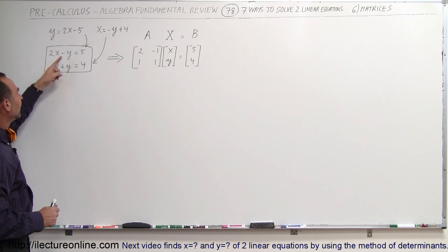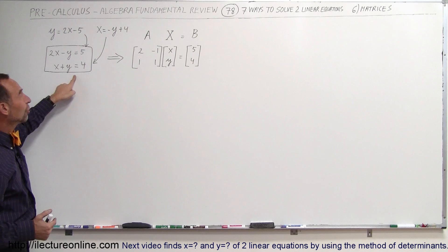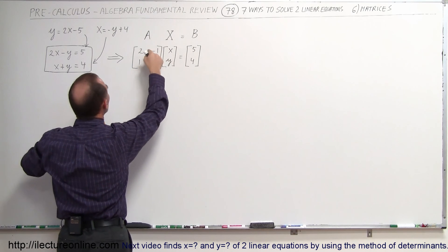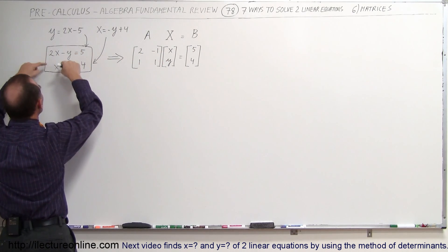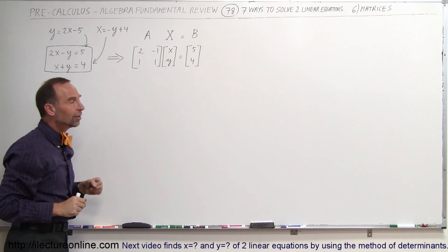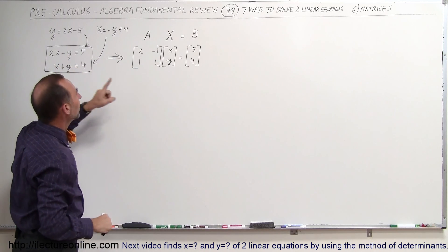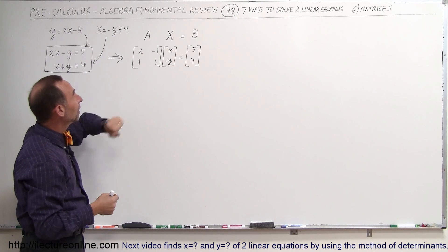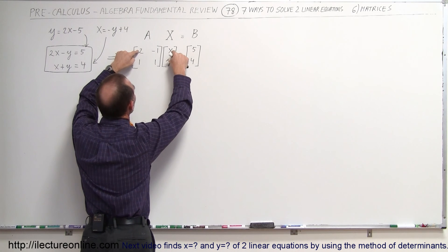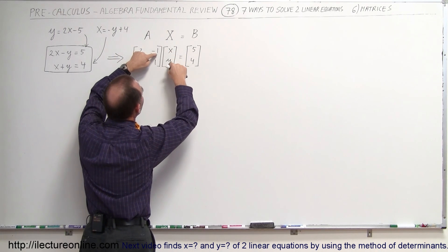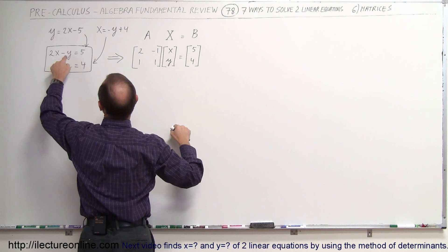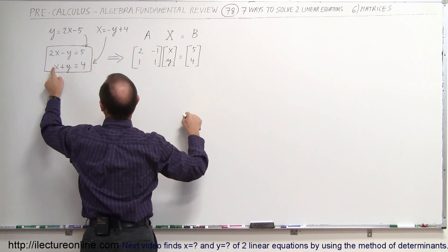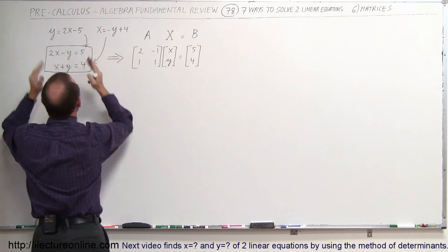Once we have it in that format, this can be written in matrix format as one matrix times another matrix equals a third matrix. The left matrix contains the coefficients of x and y, the middle matrix contains the variables x and y, and the right matrix contains the two constants. Multiplying the two left matrices together gives back 2x minus y equals 5, and x plus y equals 4 — exactly the same as before.